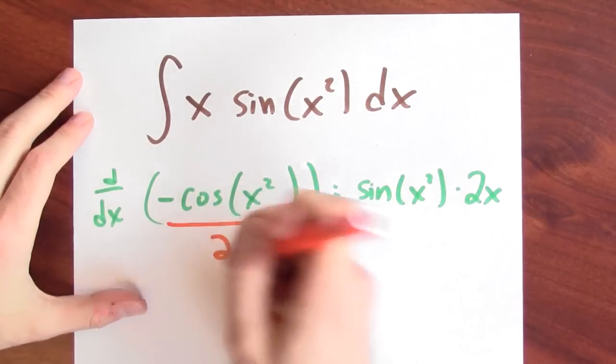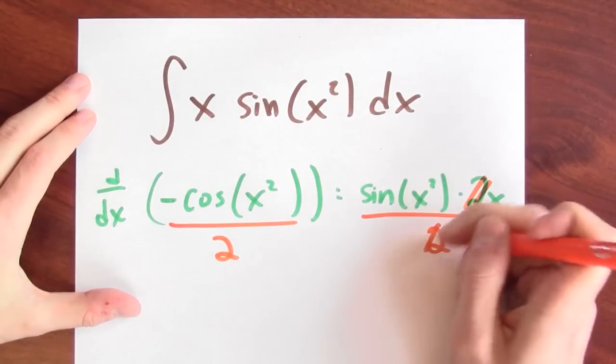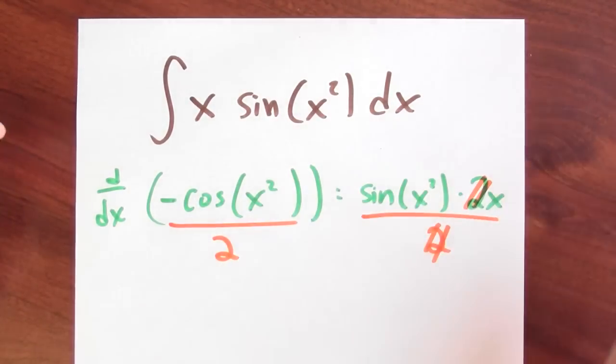So I can fix that. I'll just divide this by 2, which will have the effect of dividing that by 2. But then these 2's will cancel, and now I have found an anti-derivative for x times sine of x squared. And yeah, that works, but it was totally ad hoc. I mean, how did I know to divide by 2? I just guessed and then fixed my guess.